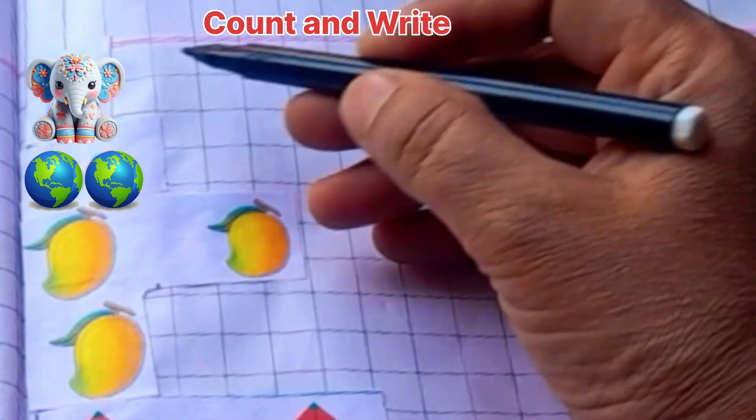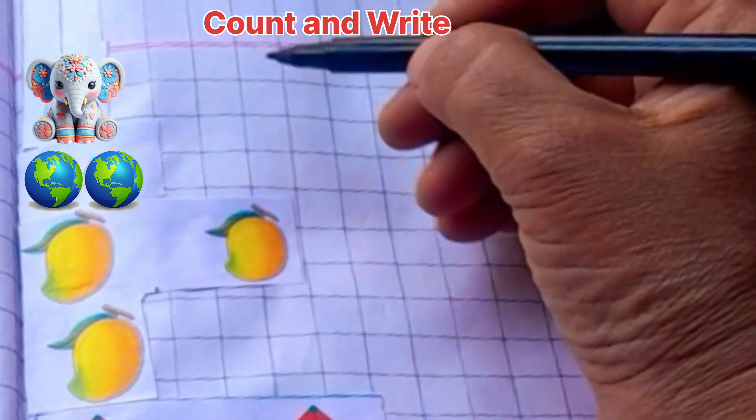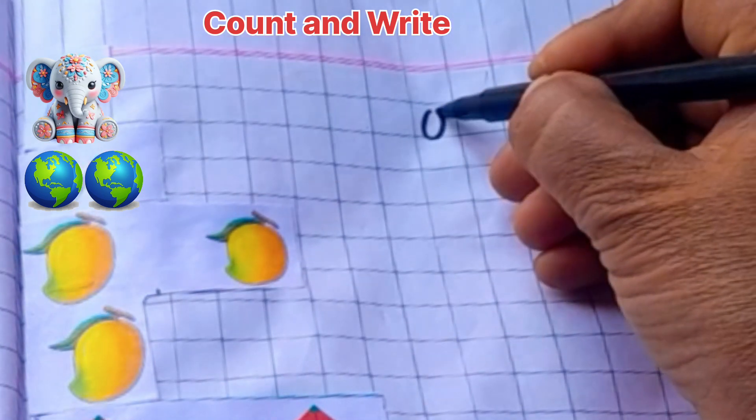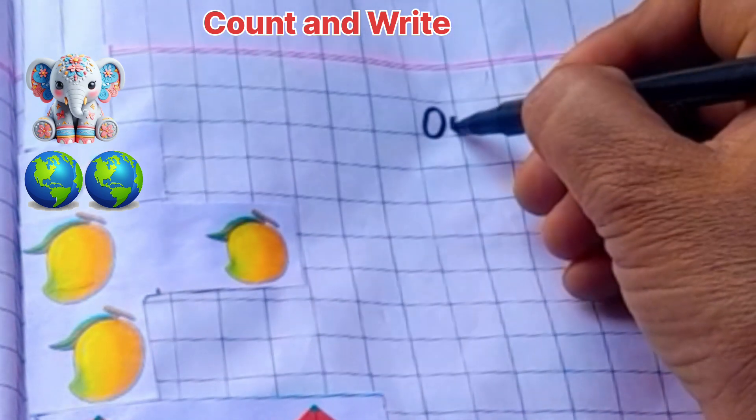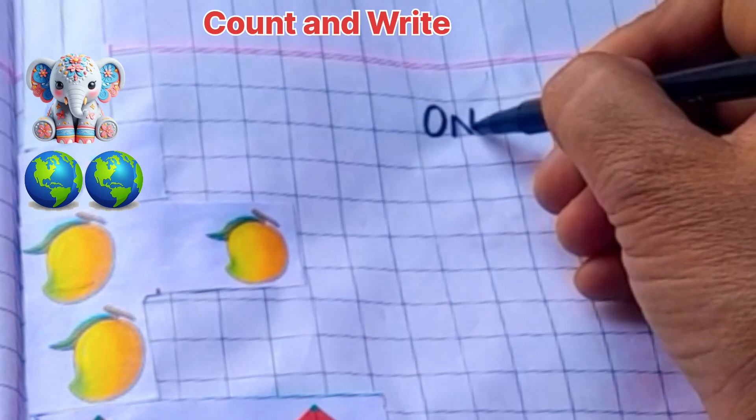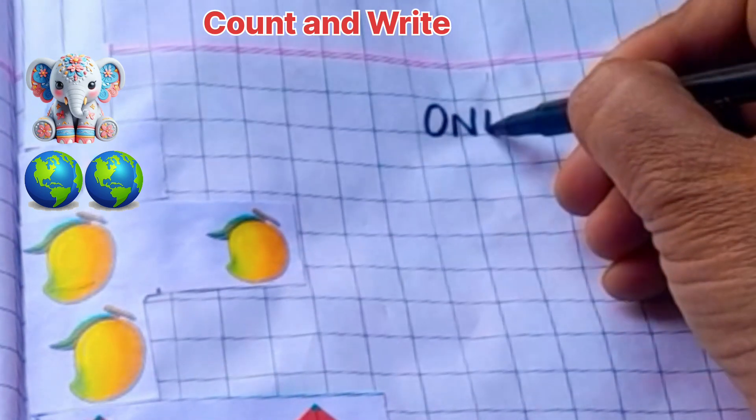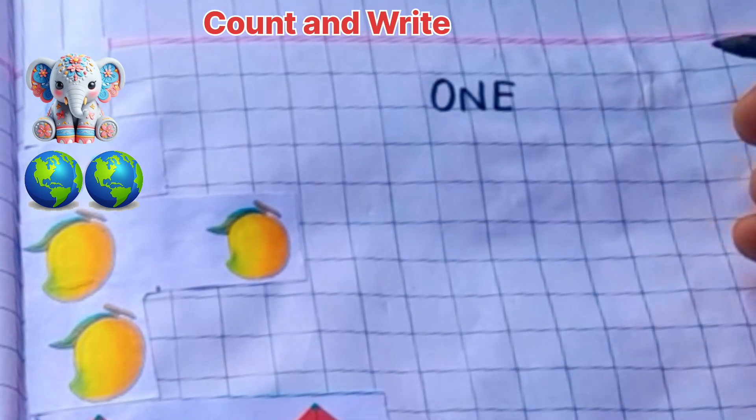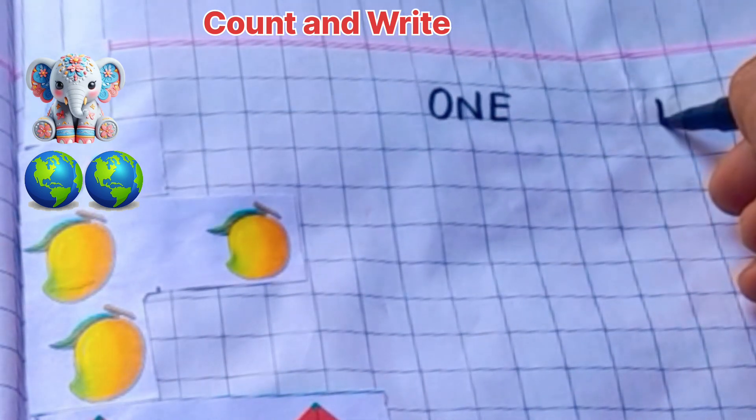Today we are going to learn count and write. An elephant. O, N, E, 1. One elephant.